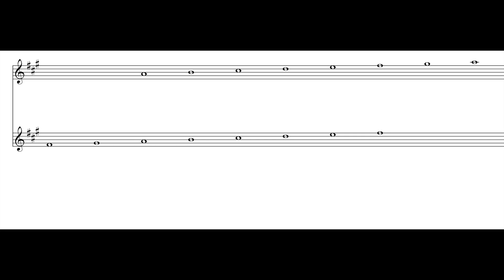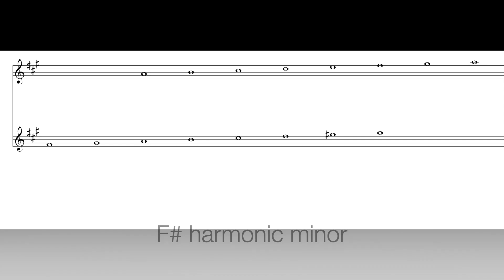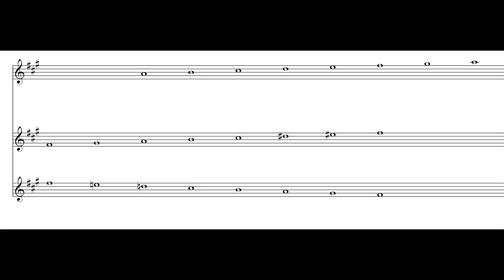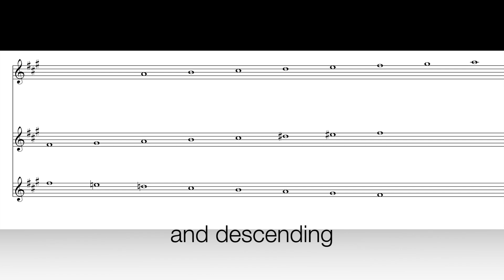For three sharps — F, C, and G sharps, Father Charles goes — we get the key and scale of A major. Counting down three — A, G sharp, F sharp — or up six — A, B, C sharp, D, E, F sharp — the relative minor of A major is F sharp minor: F sharp, G sharp, A, B, C sharp, D, E, F sharp. To create the harmonic minor, we sharpen the seventh note: E becomes E sharp — that's the white key. To create F sharp melodic minor, we sharpen the sixth note D to D sharp on the way up. But on the way down, we remember to cancel any of those accidentals on the sixth and seventh notes.